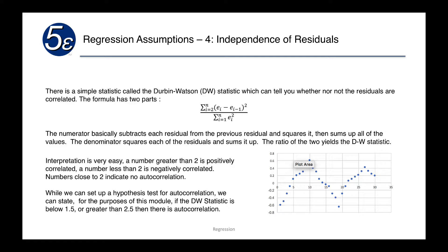The numerator subtracts each residual from the previous residual and squares it, then sums up all of the values. The denominator squares each residual and sums it up. The ratio will yield what we call the Durbin-Watson statistic. The interpretation is fairly easy. A number greater than 2 is positively correlated, and a number less than 2 is negatively correlated. Numbers close to 2 indicate no autocorrelation.